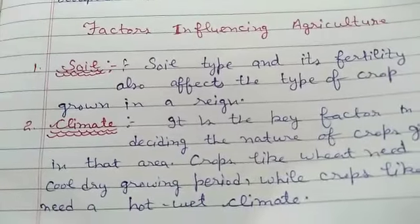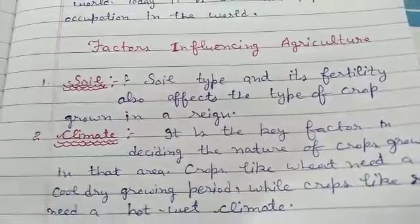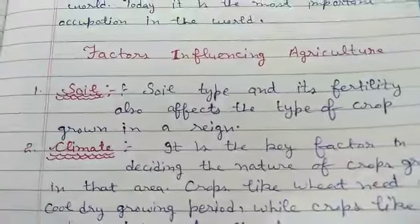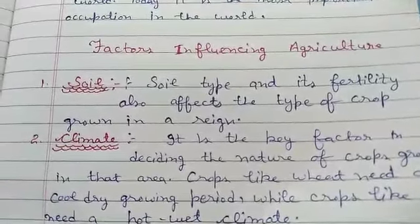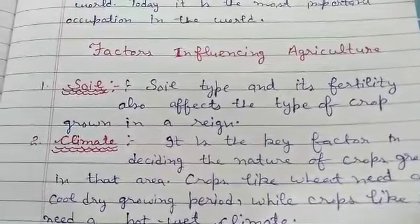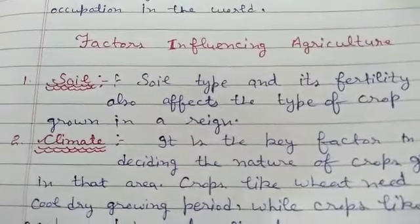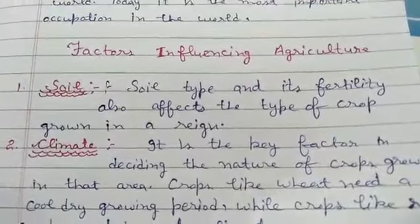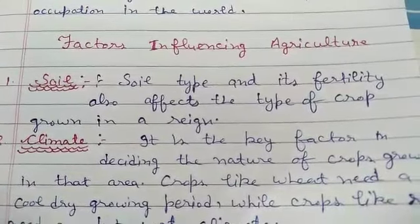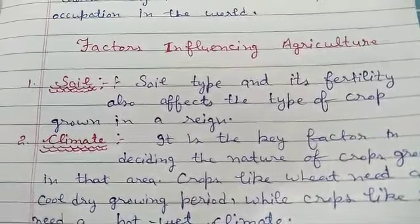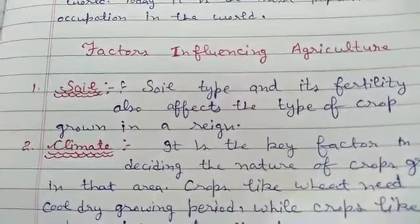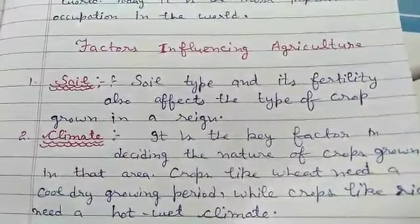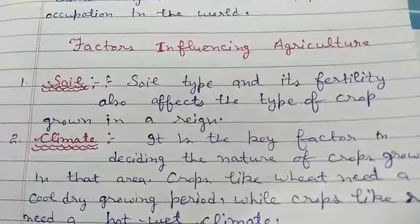The second factor that influences agriculture is climate. It is the key factor in deciding the nature of crops grown in an area. Crops like wheat need a cool, dry growing period, but during harvesting it needs a hot, dry season. While other crops like rice need a hot, wet climate.